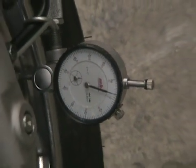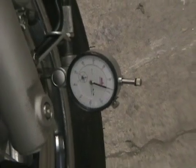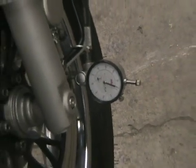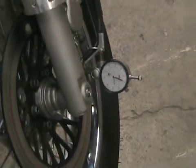Dial indicators are used to measure run-out or piston position. This tool is used to measure bent shafts, valves, or for timing an engine.